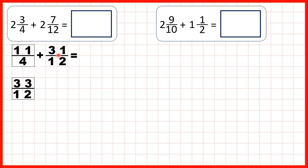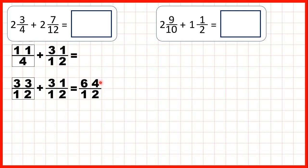So now we can add the 31 twelfths. Remember, when we're adding fractions with a common denominator, the denominator stays the same in our answer, and 33 plus 31 is 64. So as an improper fraction, our answer is 64 twelfths.